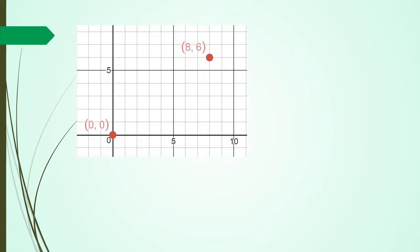Let me show you the next example. I've got this red point here which is (0, 0) and then I've got another point which is (8, 6). If I join these up I've got a straight line. What I'm looking for is the middle of that straight line between the two red points.